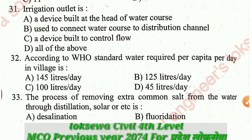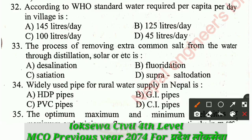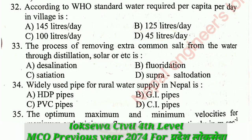Question number 32: According to WHO standard, water required per capita per day in a village. The correct answer is 45 litres per day, though some sources suggest 100 lpd. Books generally give 45 as the standard per capita per day for villages.